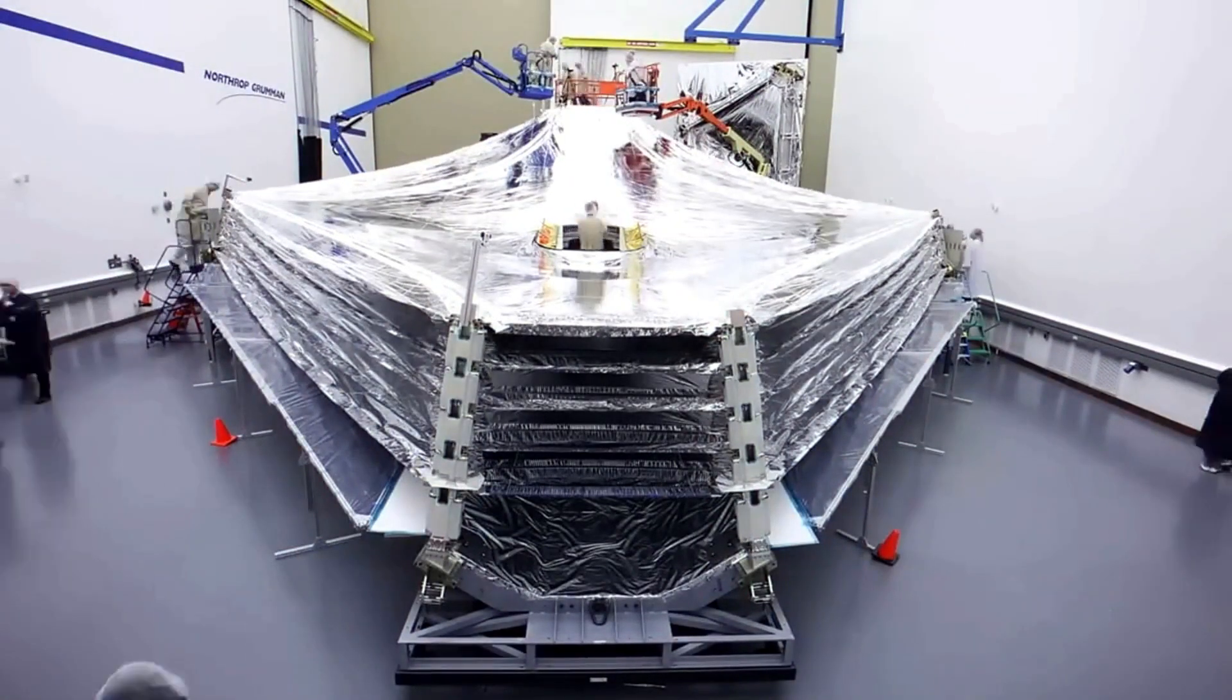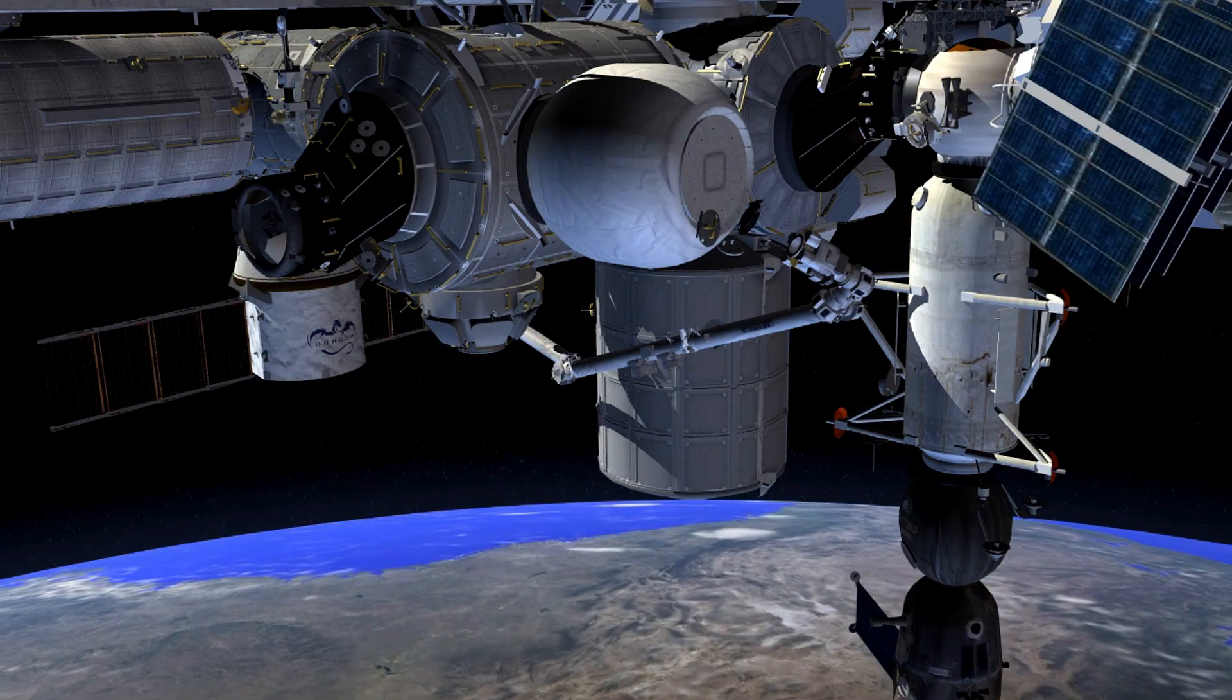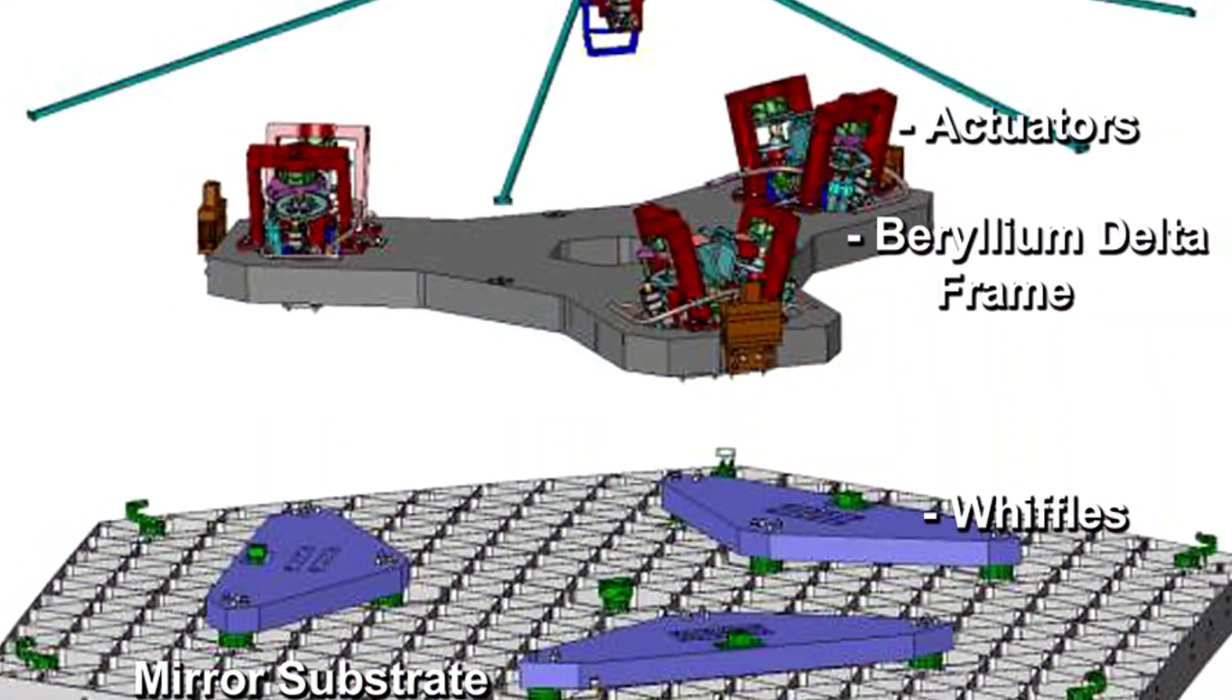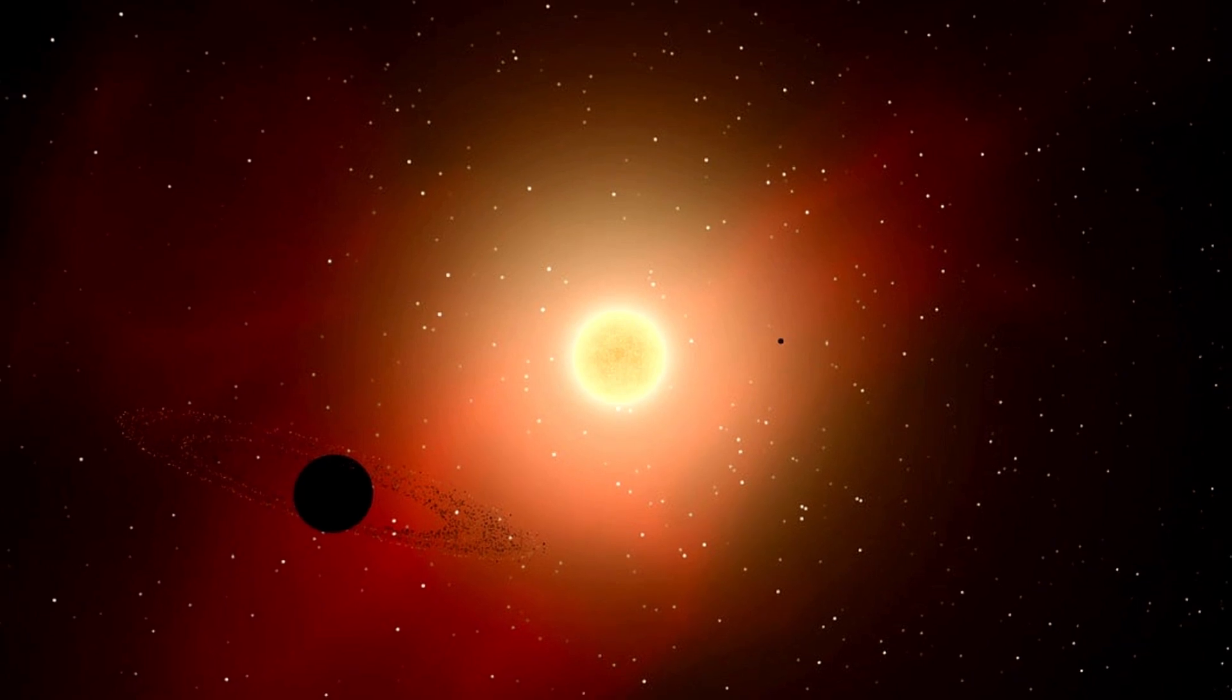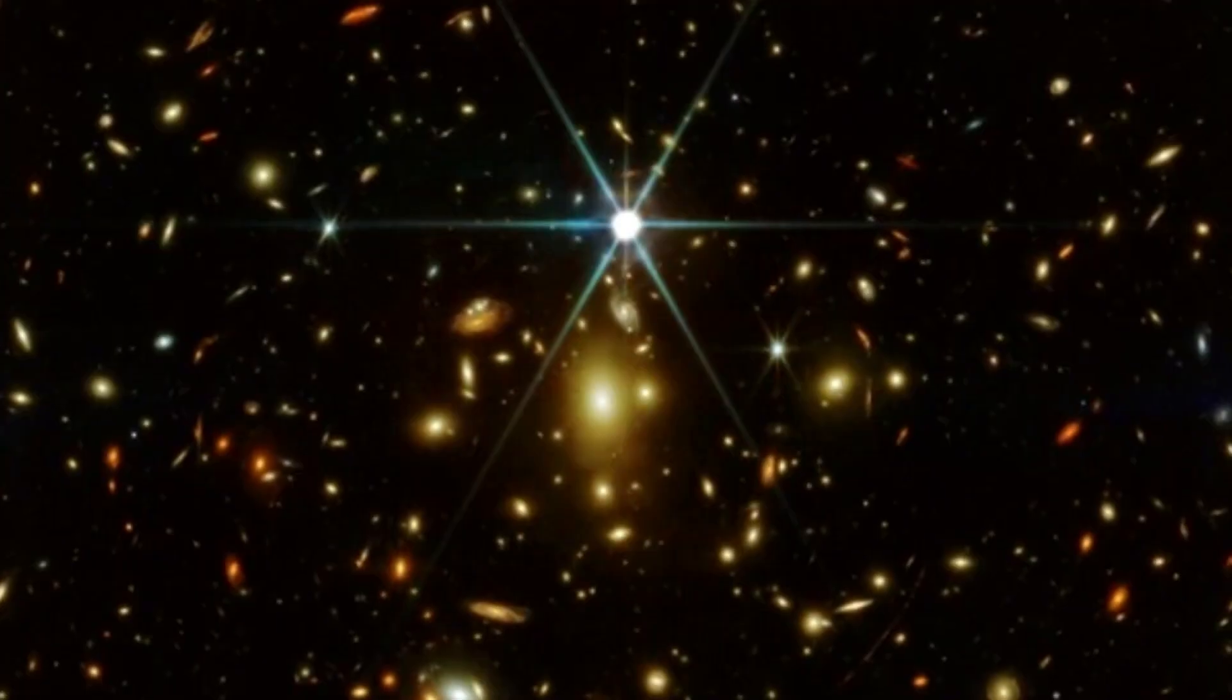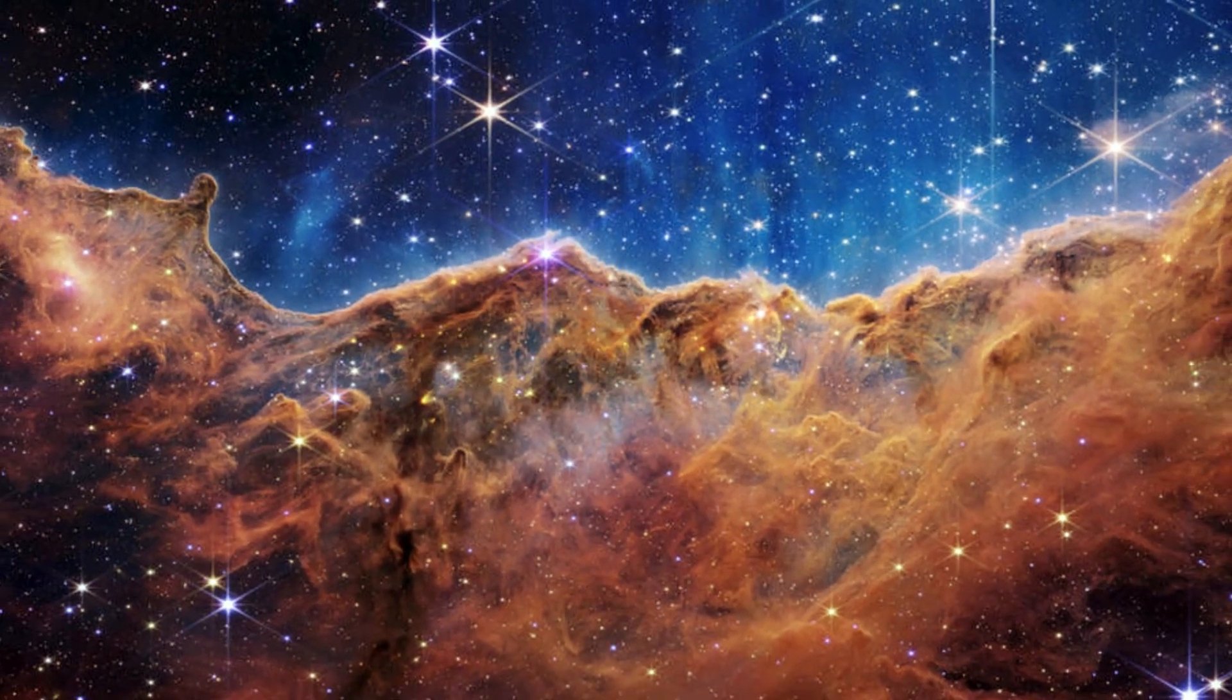These instruments include a near-infrared camera, a near-infrared spectrograph, and a mid-infrared instrument. It was able to capture the clearest image of Proxima b to date using its powerful instruments and advanced technology. The telescope uses a technique called transit photometry, which involves observing a star as a planet passes in front of it. By measuring the changes in the star's brightness, astronomers can determine the size, orbit, and other characteristics of the planet.